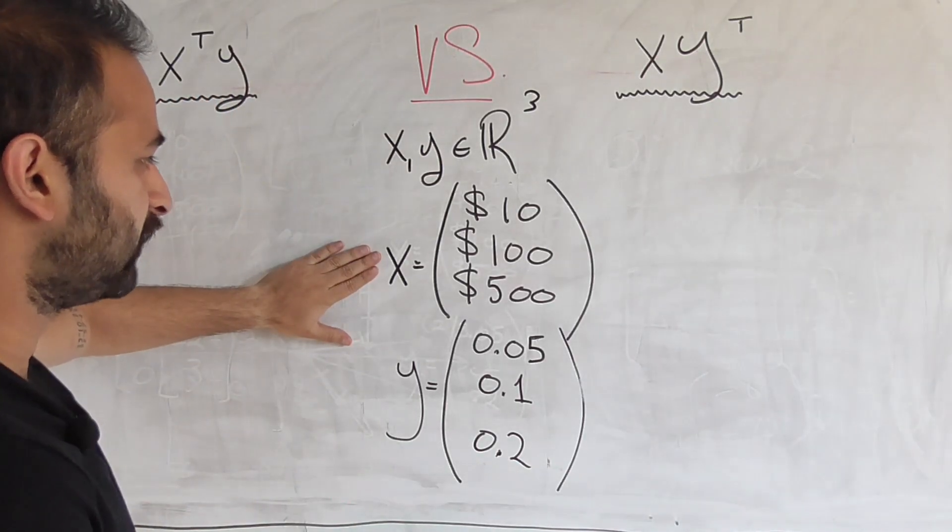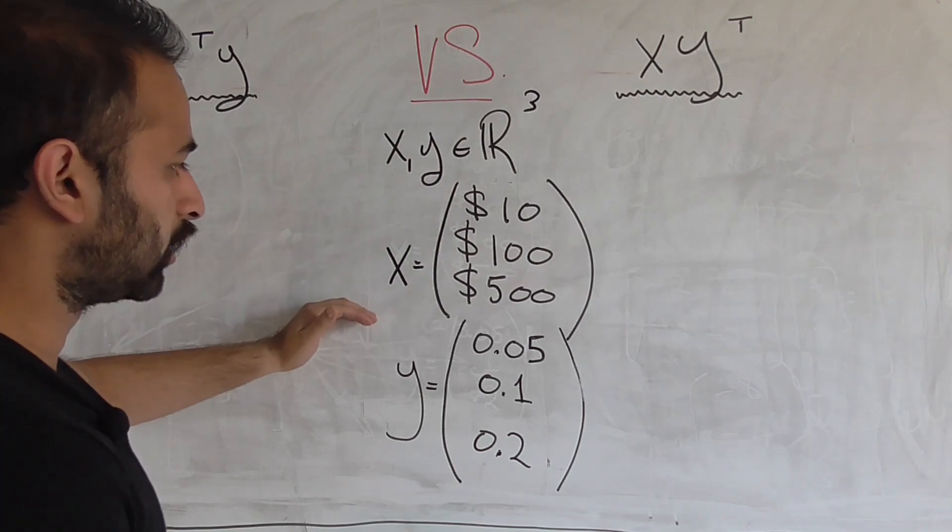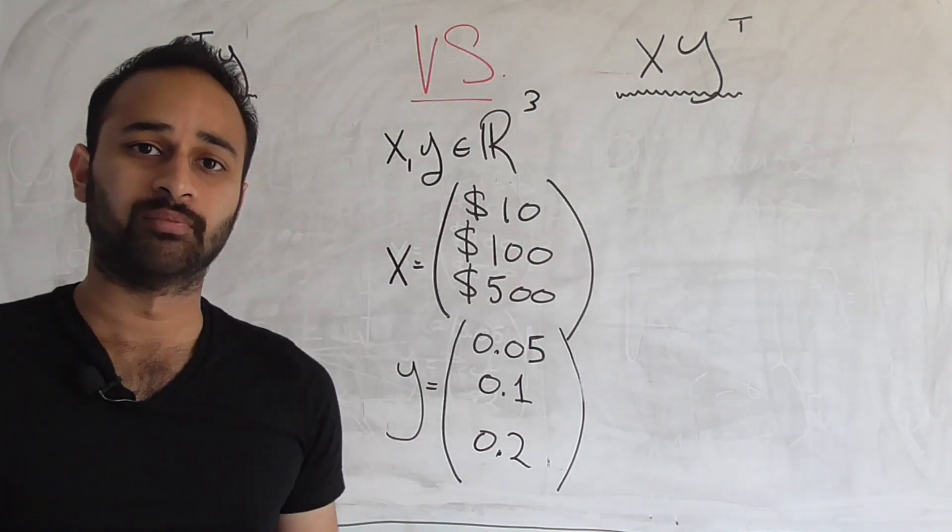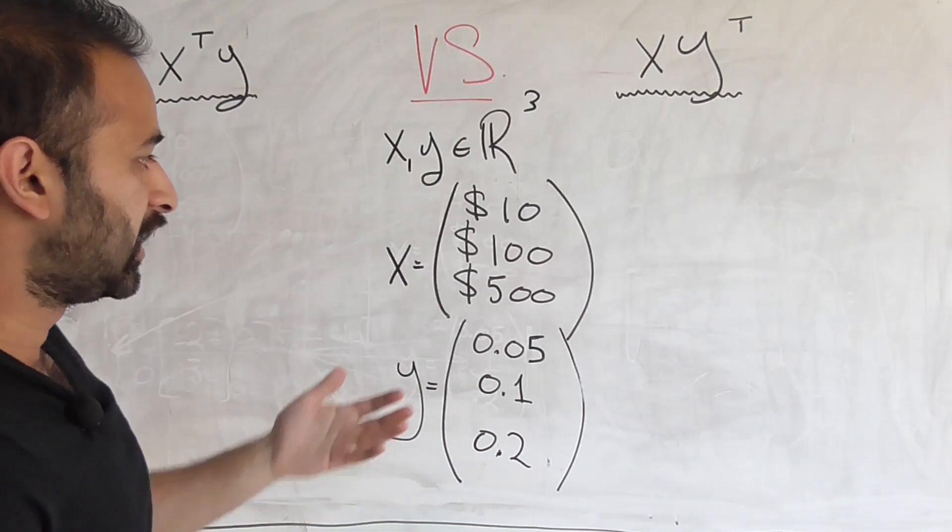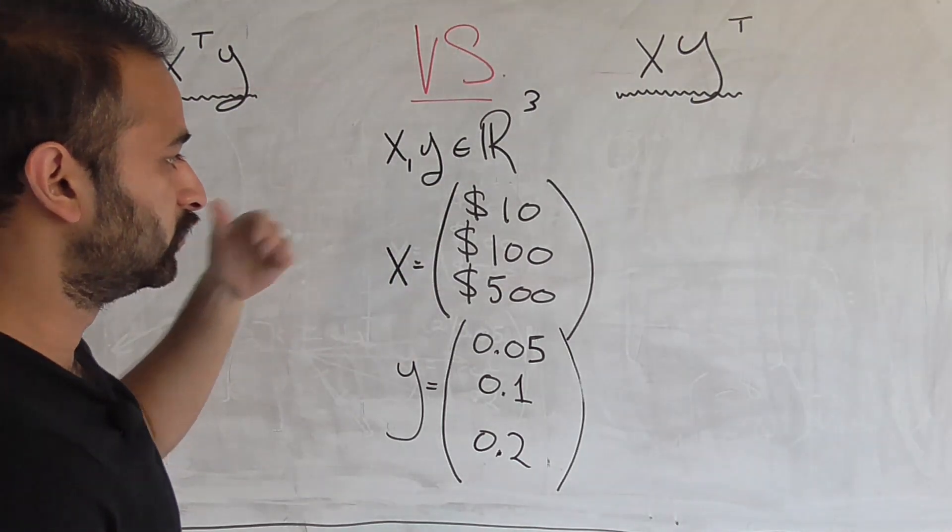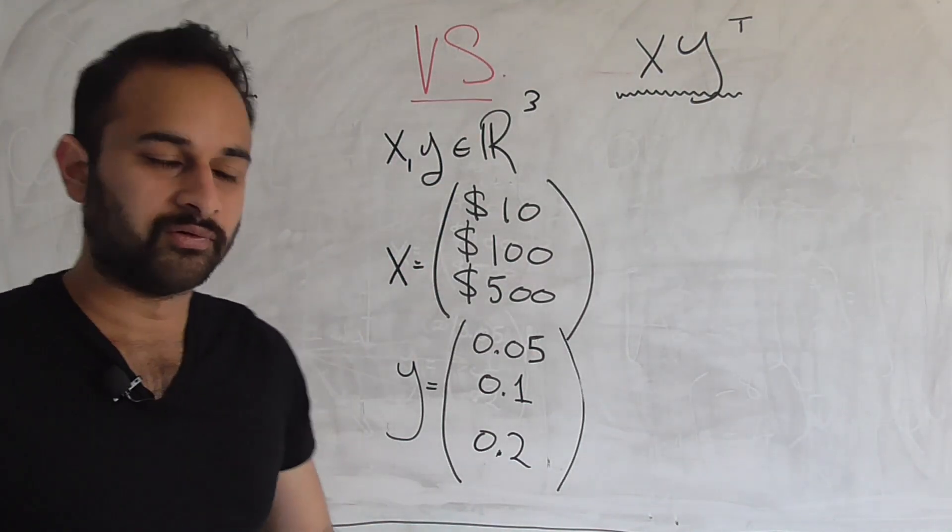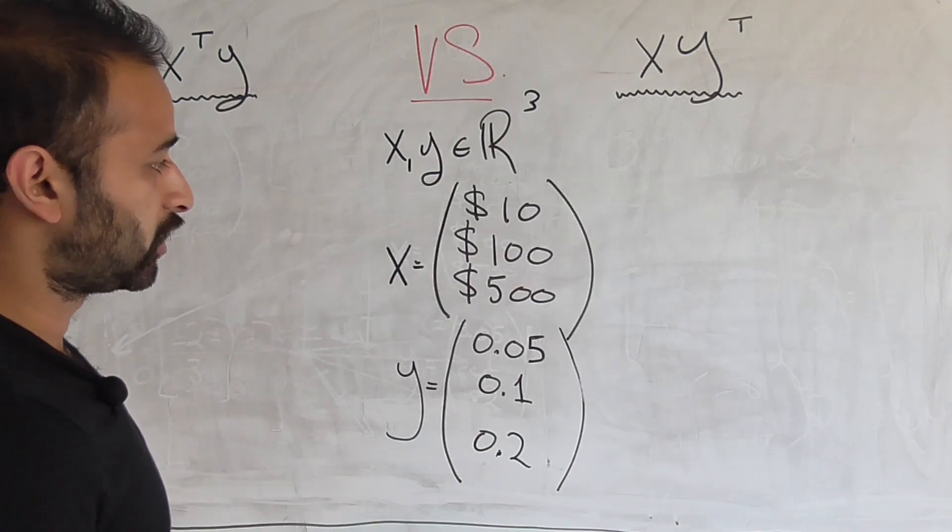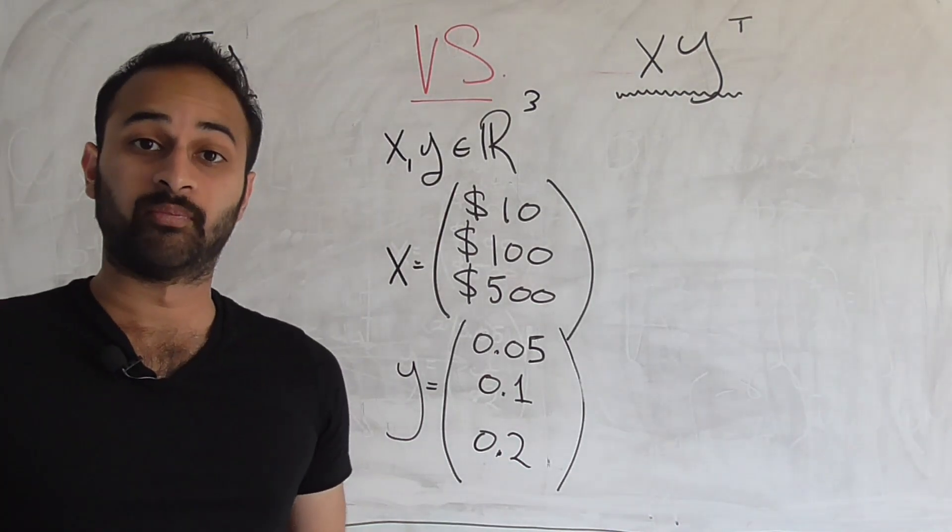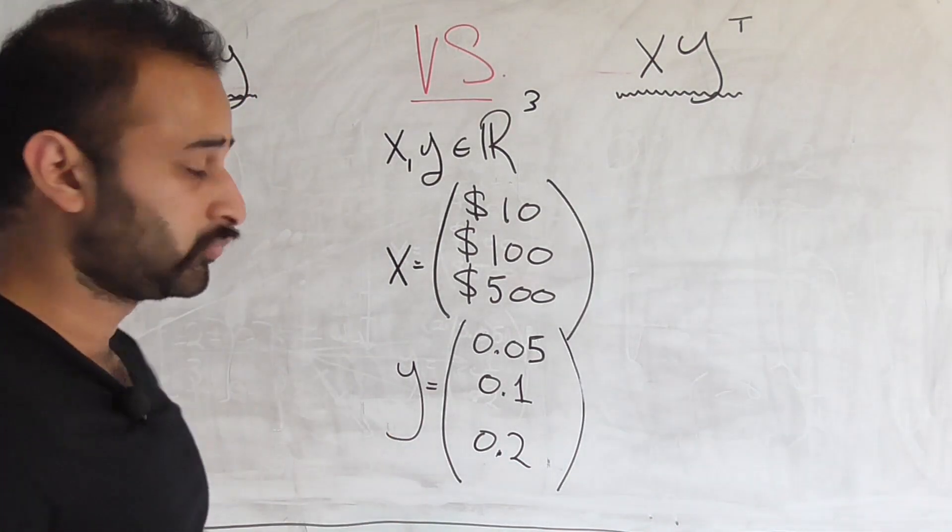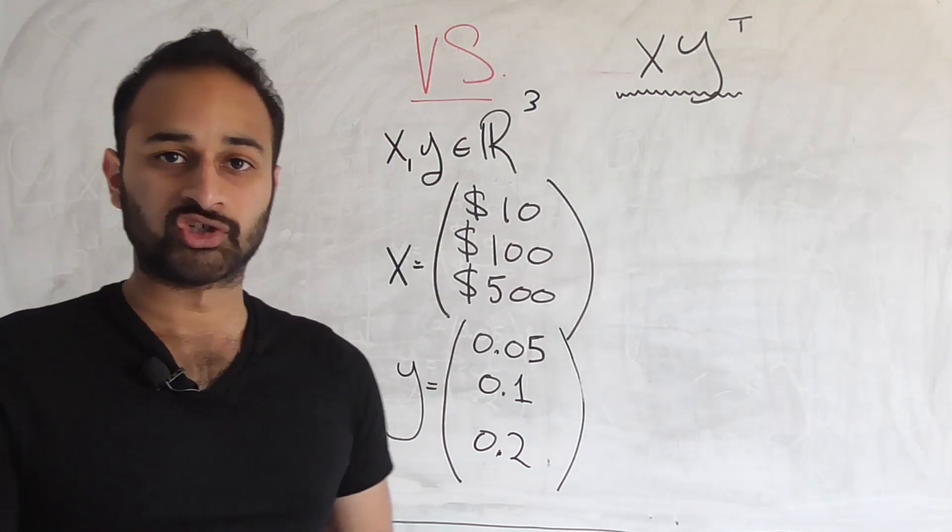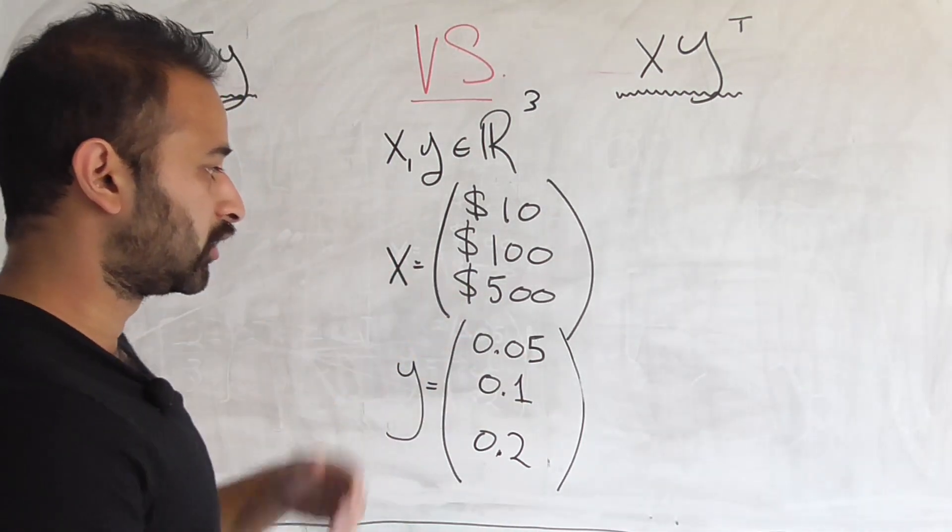And we're going to say that X is a vector that contains different dollar amounts that you spent on a recent business trip. So we're going to say that the first one is how much you spent on food. Let's say you spent $10 on food. The next one is how much you spent on transportation. Let's say you spent $100 on transportation. The last one is how much you spent on lodging for housing. So you spent $500 on housing.